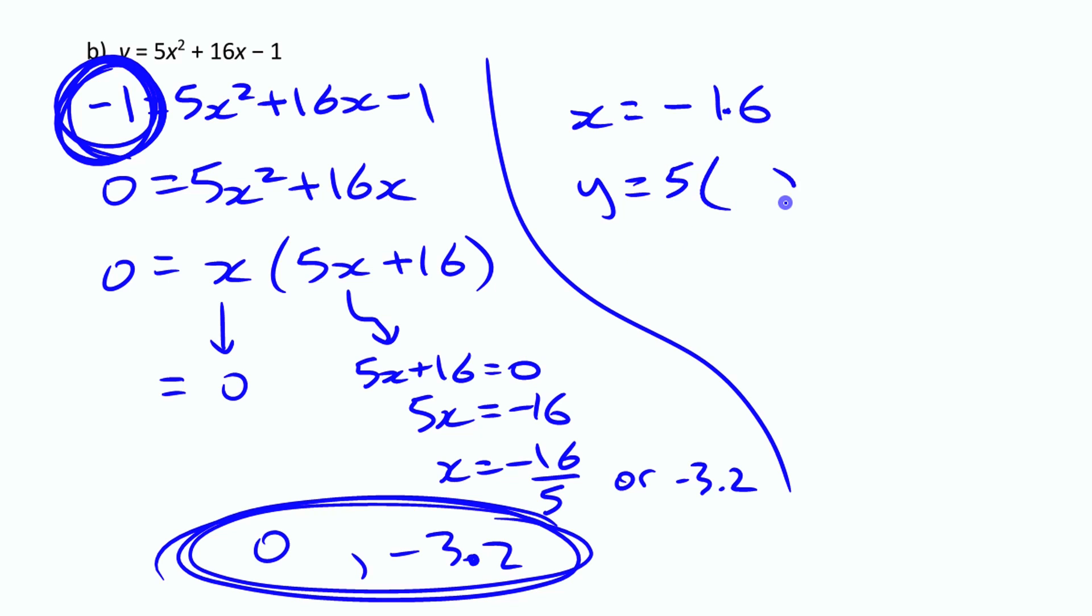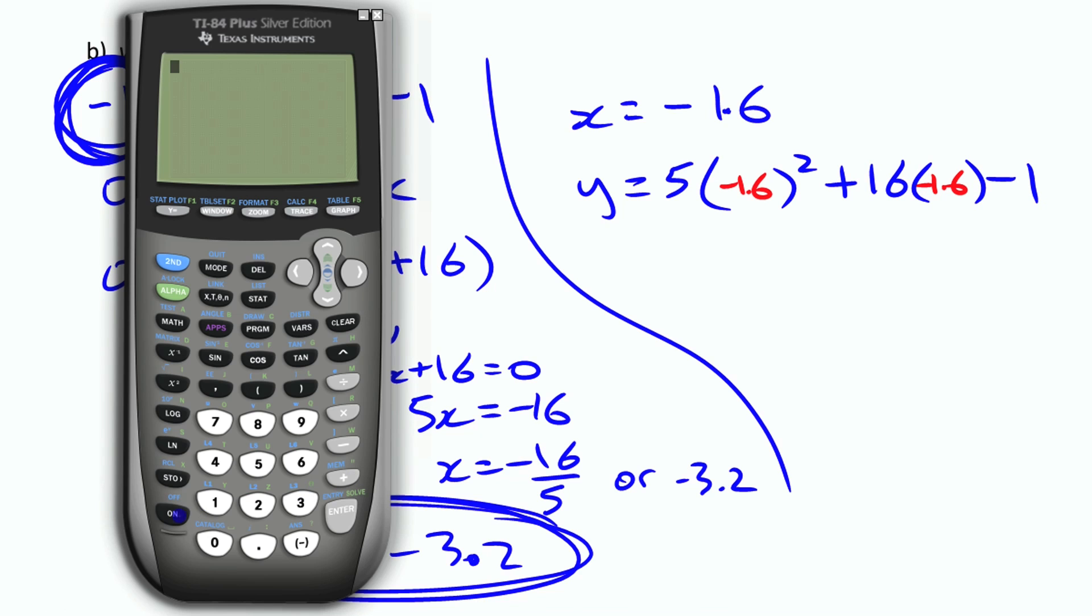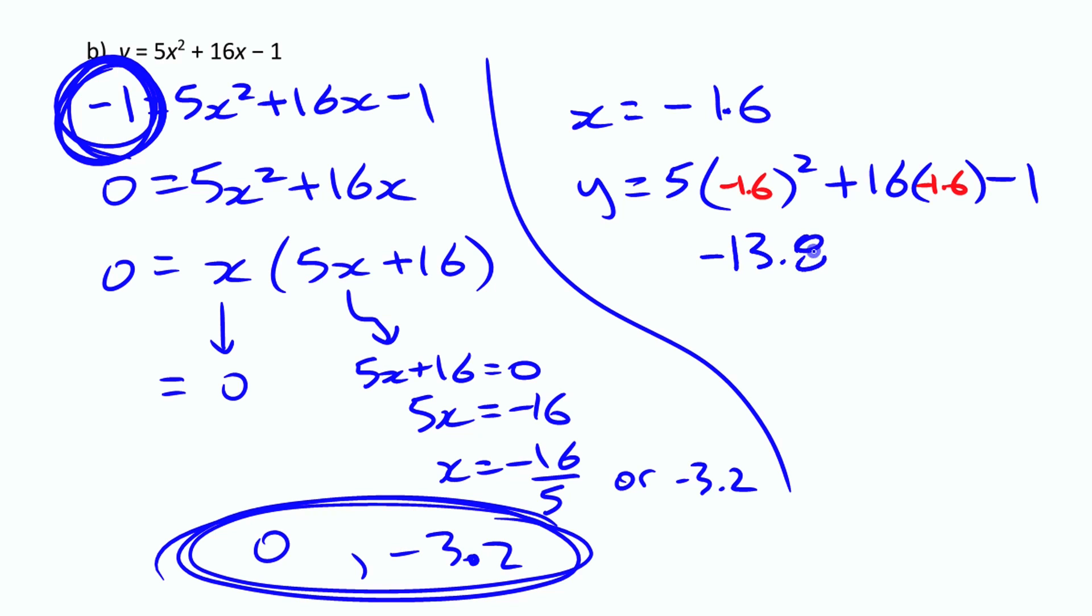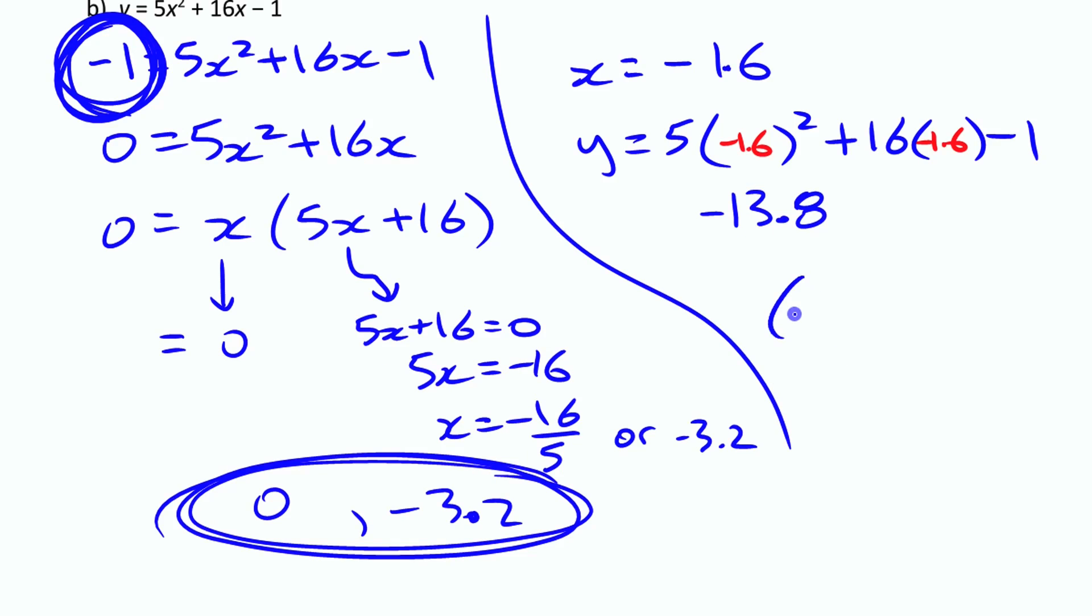Then I can find my y-coordinate of my vertex by substituting it in. I'll do it really fast here for you. So I have negative 13.8 is my y-coordinate of my vertex. So then I can say that the vertex is negative 1.6, negative 13.8. So that's our vertex.